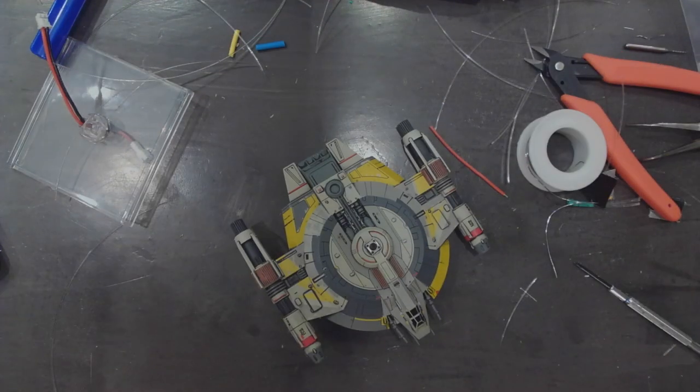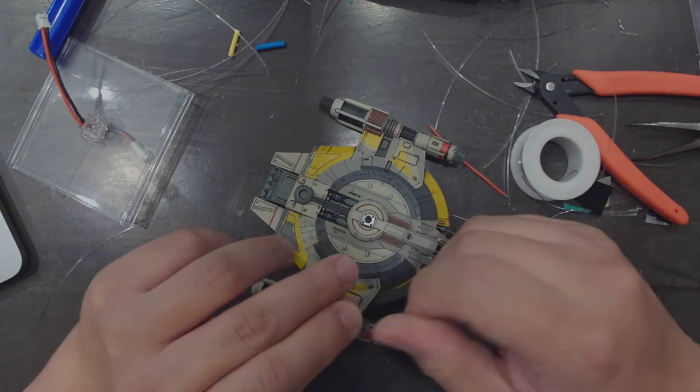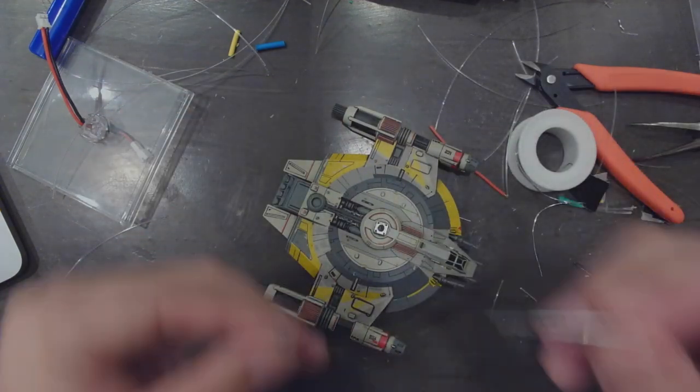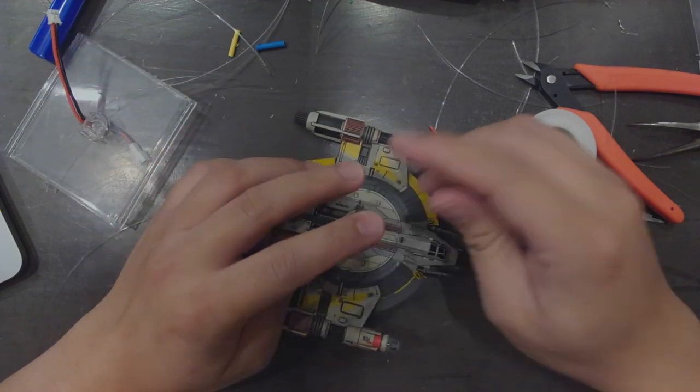To attach the turret I'm actually going to use a drill bit as the pin that holds it onto the push button switch. I dip the drill bit in a little bit of super glue, thread it through the plastic turret, glue it to the push button switch, and then thread it through the hole that I created in the last video.